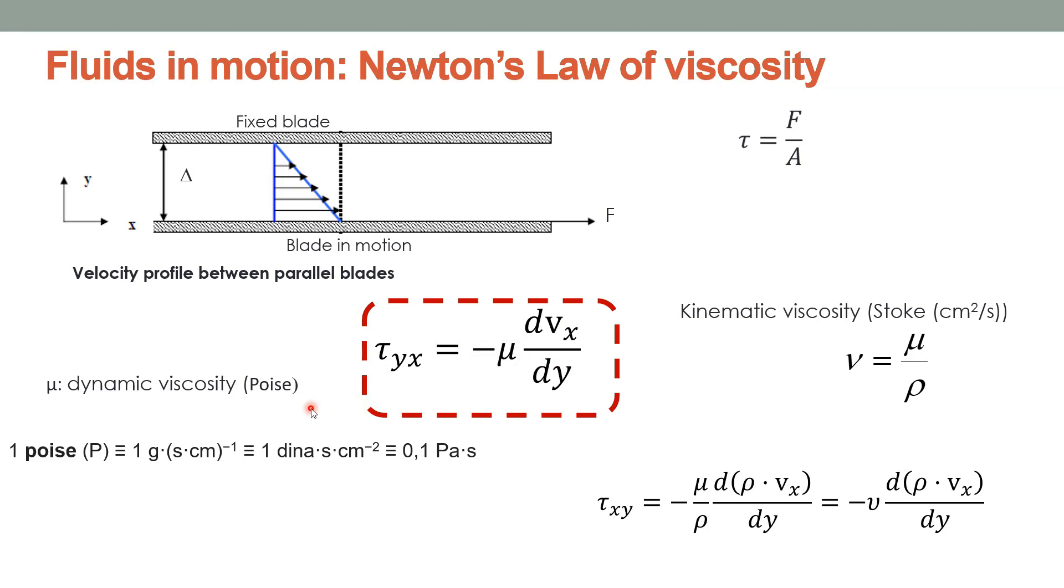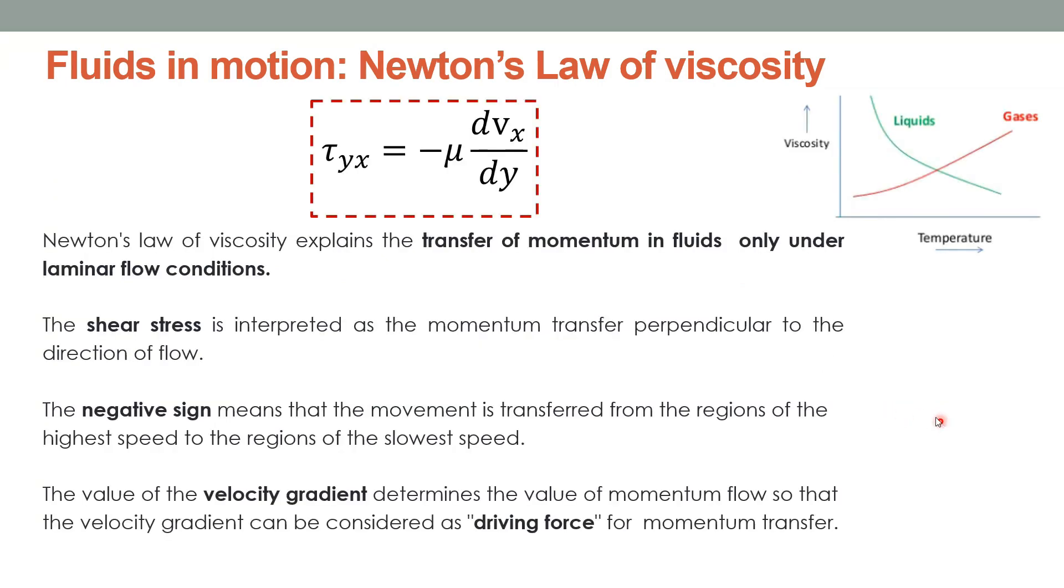Viscosity can be expressed in two ways, dynamic and kinematic viscosity depending on whether or not it is related to the density of the fluid. Thus, Newton's law of viscosity represents momentum transfer in fluids moving with laminar flow. The negative sign indicates that the motion is transferred from the regions of higher speed to those of lower speed and the velocity gradient determines the value of the momentum flow being the driving force of this transfer.